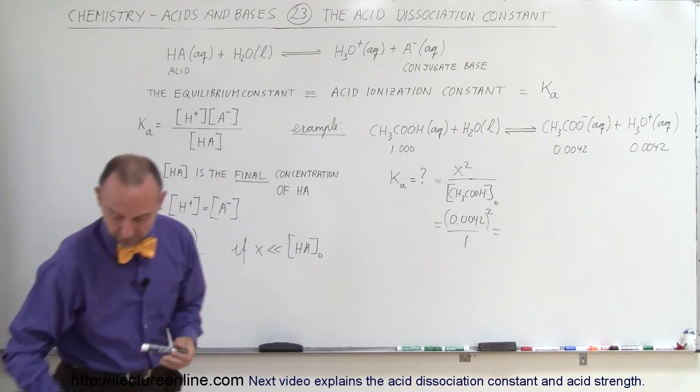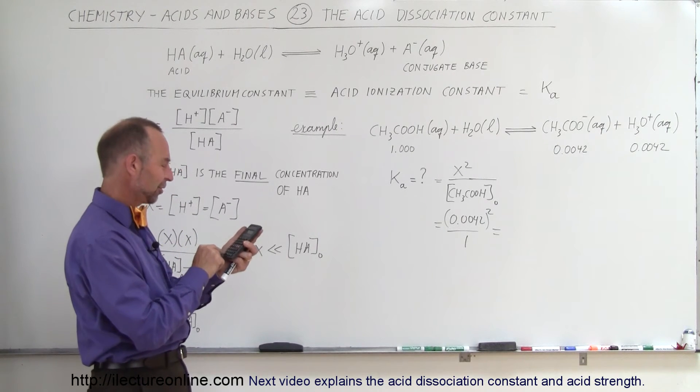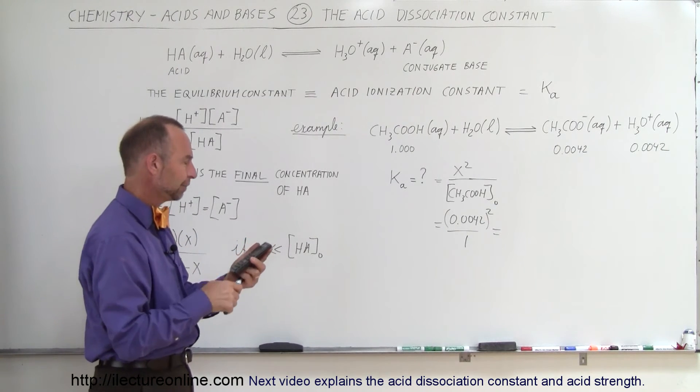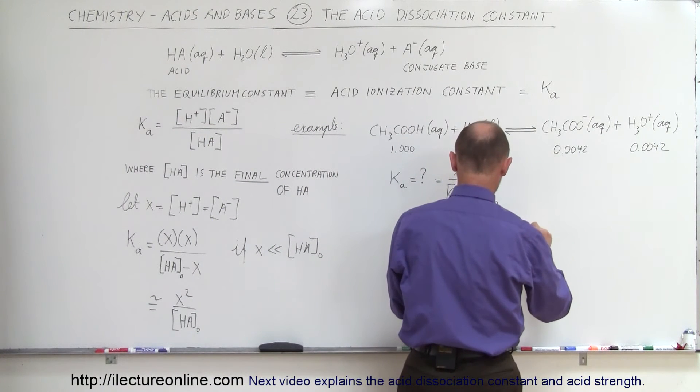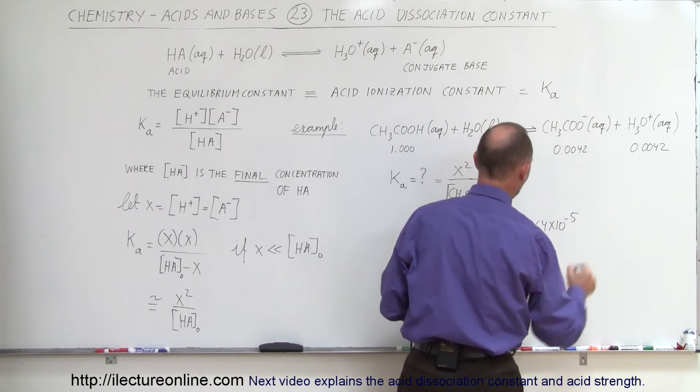With the calculator, we'll find out what that is equal to. So that would be 0.0042 squared, so that would be equal to 1.764 times 10 to the minus 5.